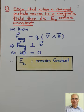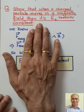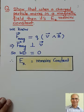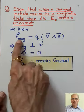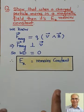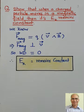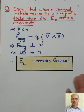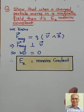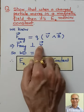Now an important question: show that when a charged particle moves in a magnetic field, its kinetic energy remains constant. Since the magnetic force is always perpendicular to the velocity vector, and when force and displacement are perpendicular to each other, the work done is zero. And when work done is zero, kinetic energy remains constant. The main argument is that the magnetic force is always perpendicular to the velocity vector.